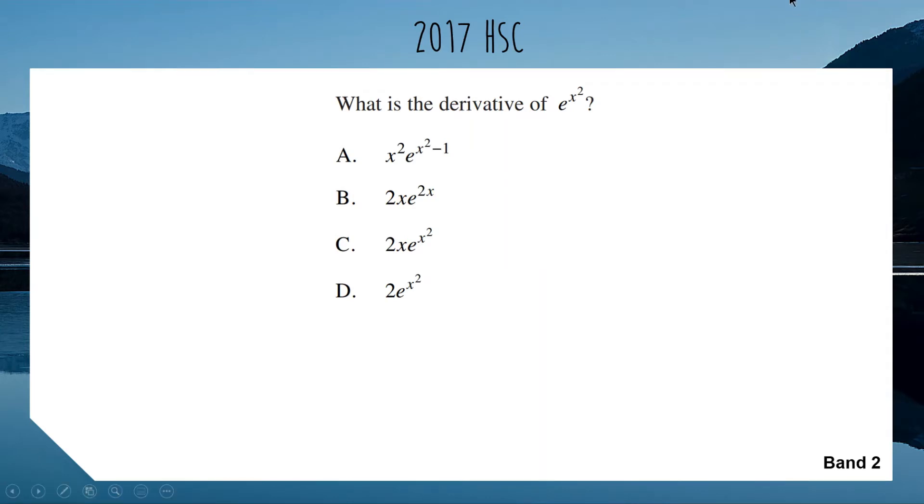For this question we need to leave the e to the x squared as it is. All we're going to do is multiply by the derivative of the exponent. So derivative of x squared is 2x. If we multiply this by 2x, we get option C which is 2x e to the x squared.